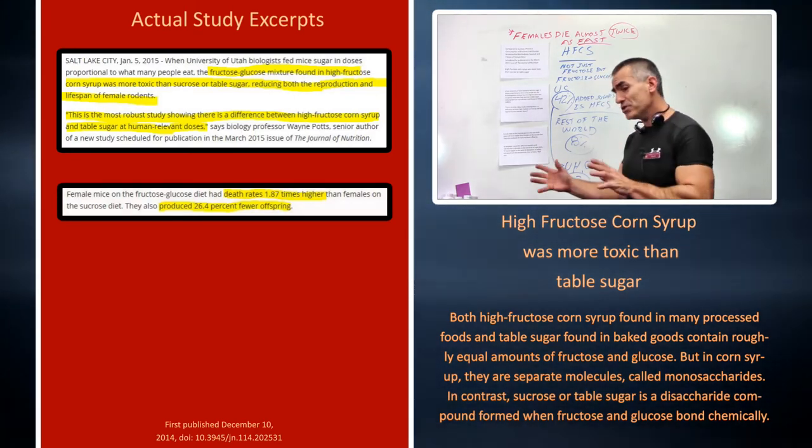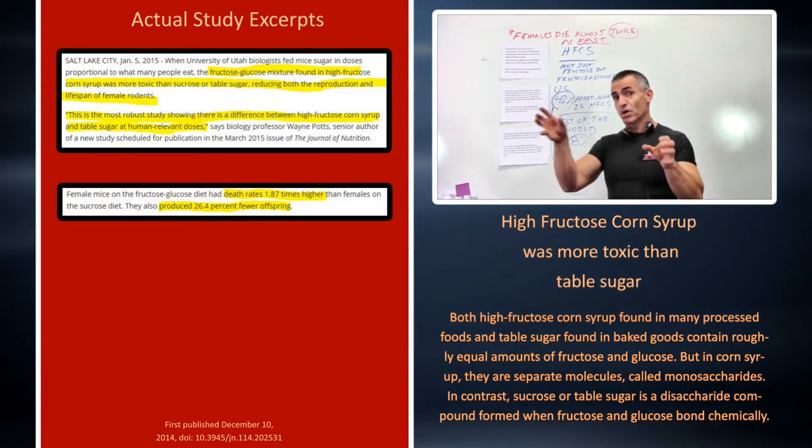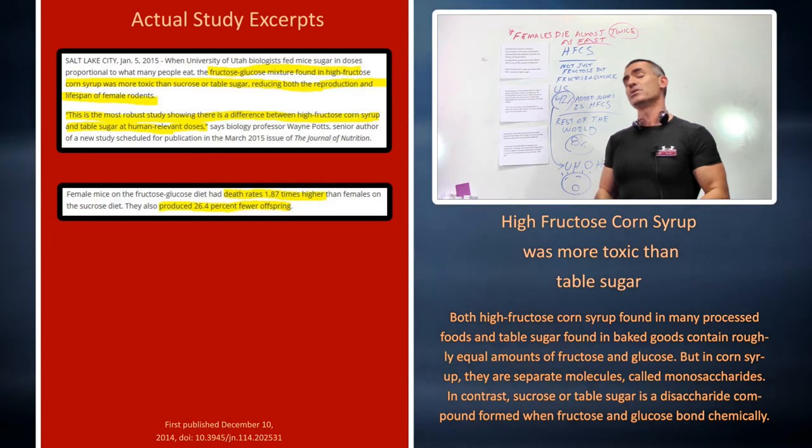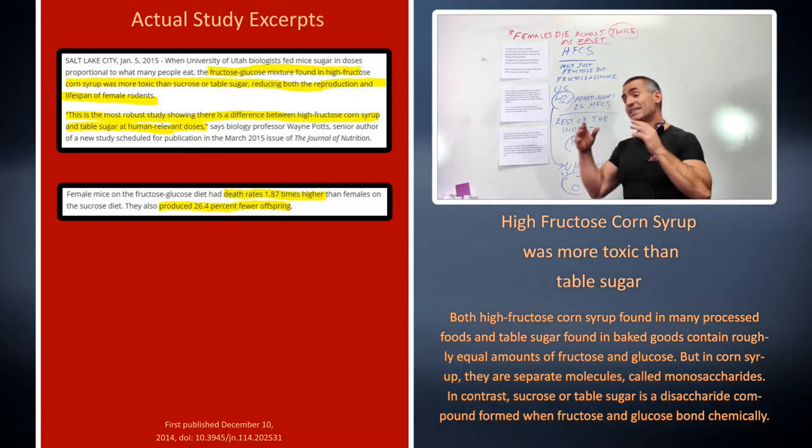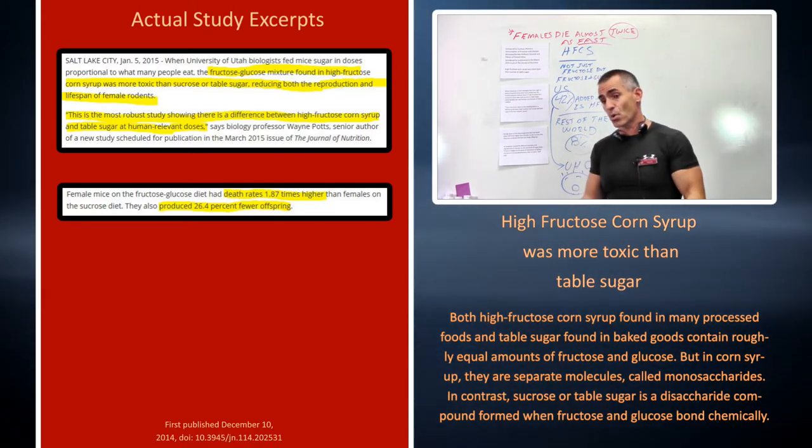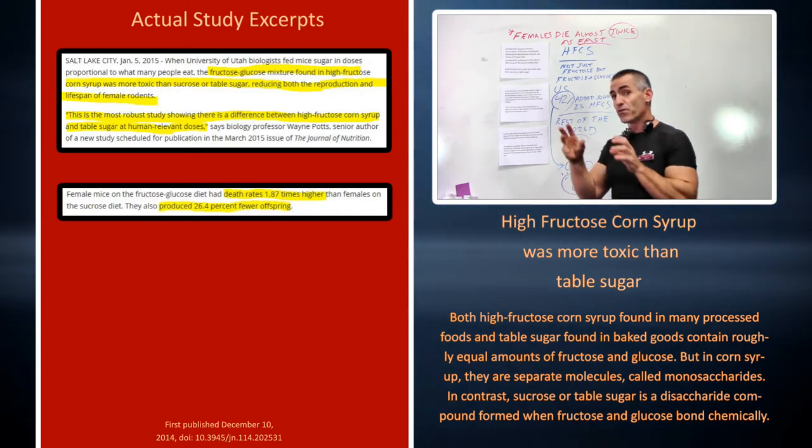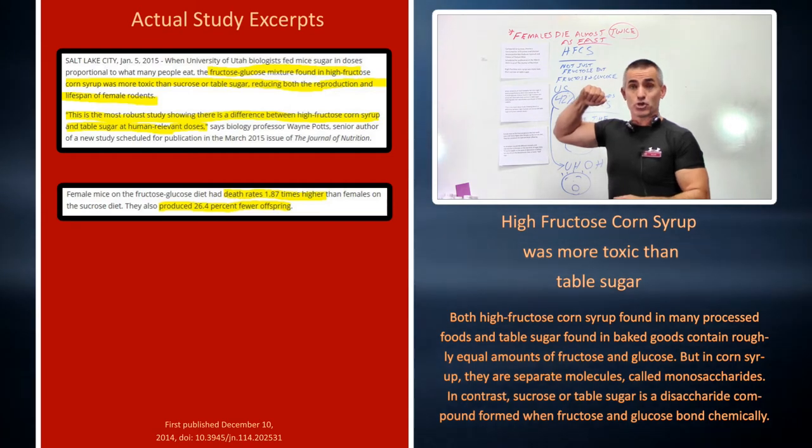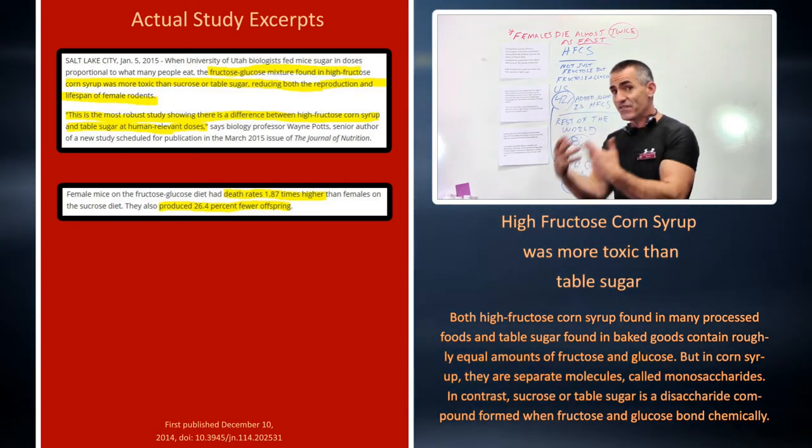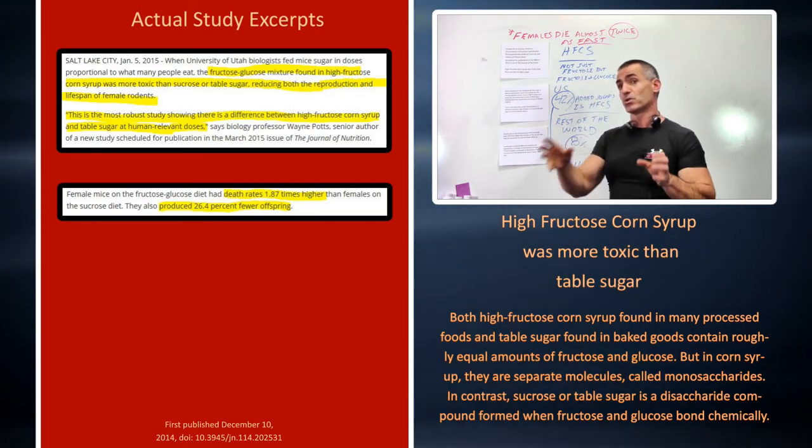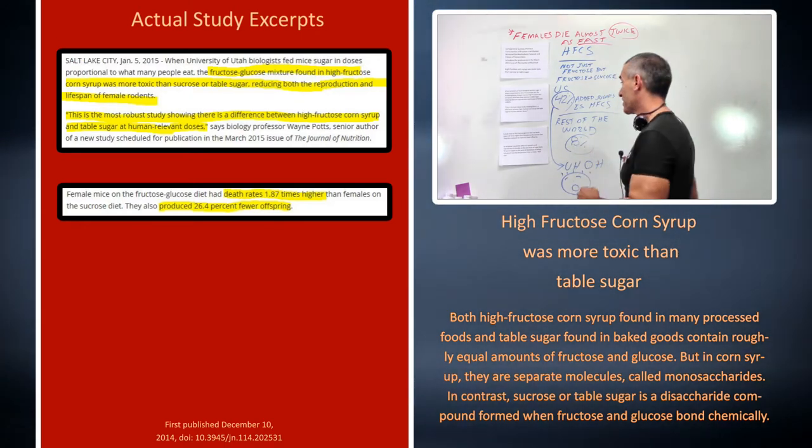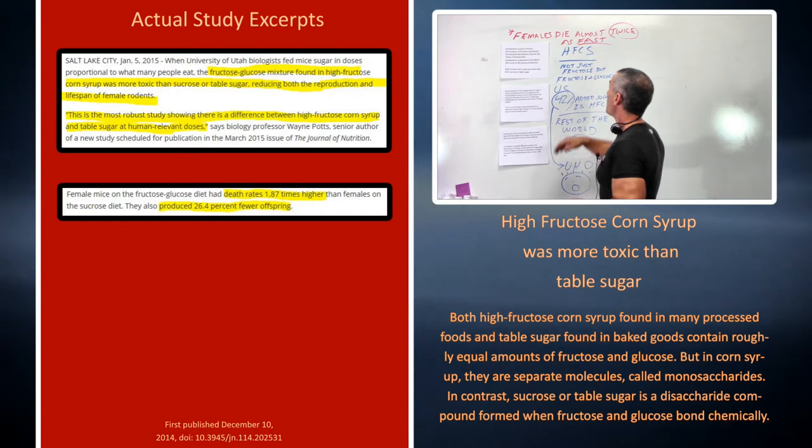What makes this study so different is that most studies only compare fructose or sucrose side by side. What these guys did at the University of Utah is they actually took the exact same glucose and fructose monosaccharides as it appears in typical consumer-based foods and fed that to the animals, as opposed to just fructose or sucrose separately.